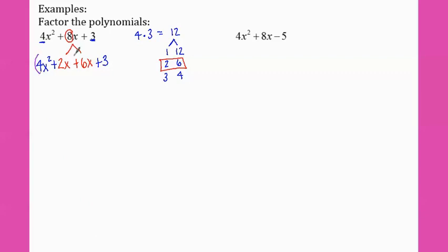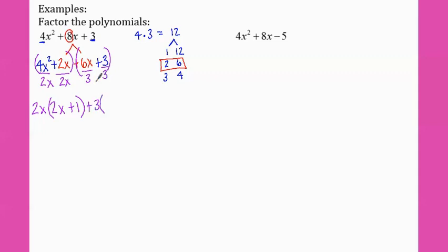Group the first two together, group the second two together. These two have two x in common, so I factor out two x and I'm left with two x plus one. Then six x and three have three in common, so I factor that out. When I divide, I get two x plus one. My matching parenthesis is one of my factors, and my GCFs are my other factor.